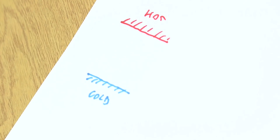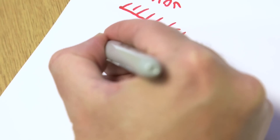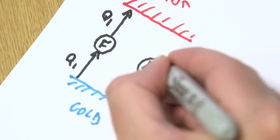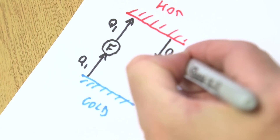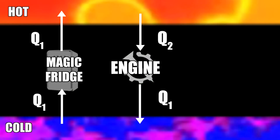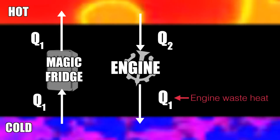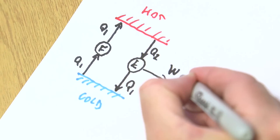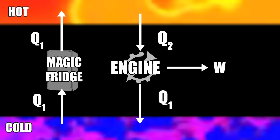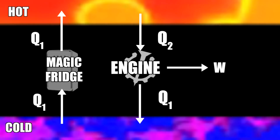Let's violate Clausius' statement — that you can't get heat to flow from the cold body to the hot body. Assume we have a magic fridge which actually allows us to suck energy out of the cold body and put it into the hot body without plugging the fridge into the mains. Then over here, we have an ordinary engine — like a steam engine — which doesn't violate any laws. We take an amount of energy Q2 out of the hot body. Since this engine isn't breaking any laws, there has to be some waste heat, which we set equal to Q1. So the work we get out is just Q2 minus Q1, by conservation of energy.